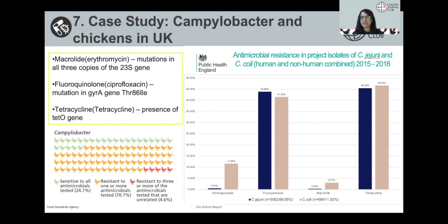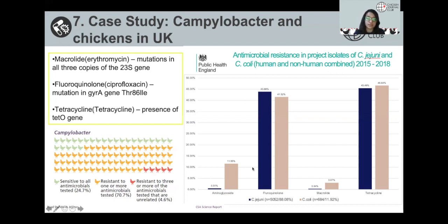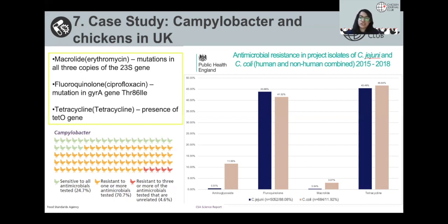Since approximately 900 million chickens were produced in 2014, this could potentially indicate millions of chickens carrying multiple-resistant Campylobacter. Public Health England also conducted another study between 2015 and 2018, looking at Campylobacter jejuni and Campylobacter coli. Both showed still high levels of fluoroquinolone and tetracycline resistance. Due to this fact, if the patient is young or elderly, they will usually be prescribed macrolides.